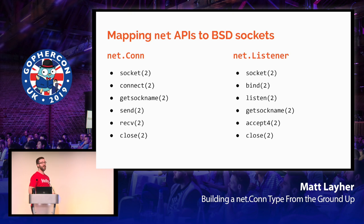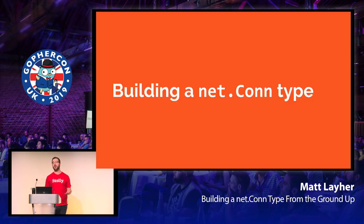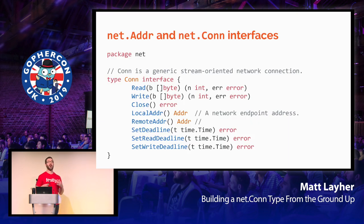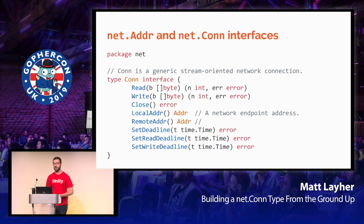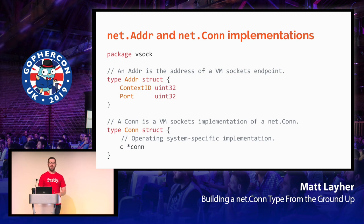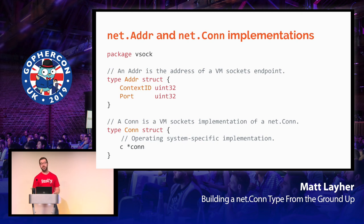To build our own NetCon type from the ground up, we need to understand the NetCon and NetAddr interfaces. NetCon is your generic stream-oriented network connection with methods like read, write, and close, plus methods to retrieve local and remote addresses. The NetAddr type is also an interface — a TCP connection returns TCP addresses, a VSOCK connection returns VSOCK addresses. There are also methods for setting deadlines. We create an addr structure with a context ID and port pair, since those are the addresses for VSOCK. Then we create a con structure: an exported type with documentation, and an OS-specific implementation with a lowercase 'c' that lives behind build tags.